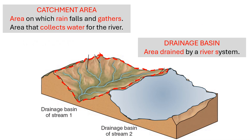Let's define the terms catchment area and drainage basin. The catchment area refers to that area on which rain falls and then gathers — it is the area that collects water for the river. The drainage basin refers to the area drained by a river system. Once the water starts moving over that land and makes its way into the river, that area is called the drainage basin.